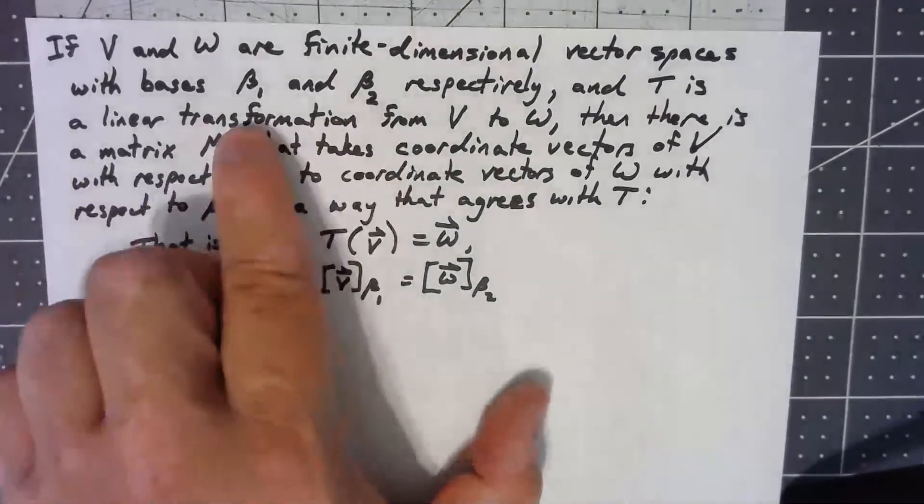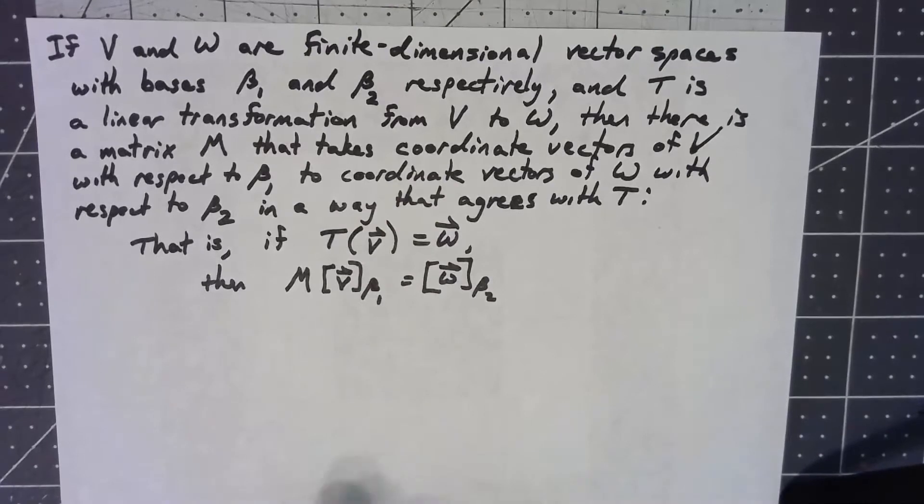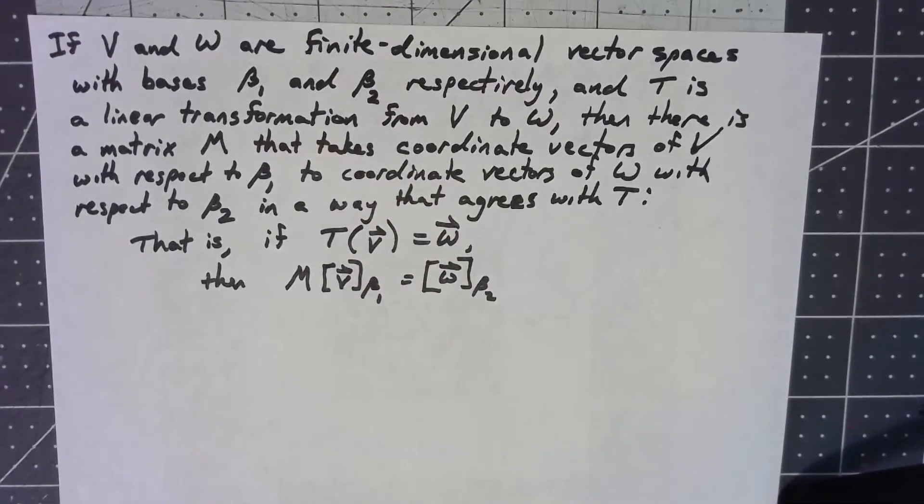But if we have two different finite dimensional vector spaces, that means they each have a finite basis, and if we've got a linear transformation that takes V to W, whether we've got an Rn or a polynomial space or whatever, doesn't matter, then there's a matrix which basically does to the coordinate vectors the same thing that the linear transformation does to the vectors.